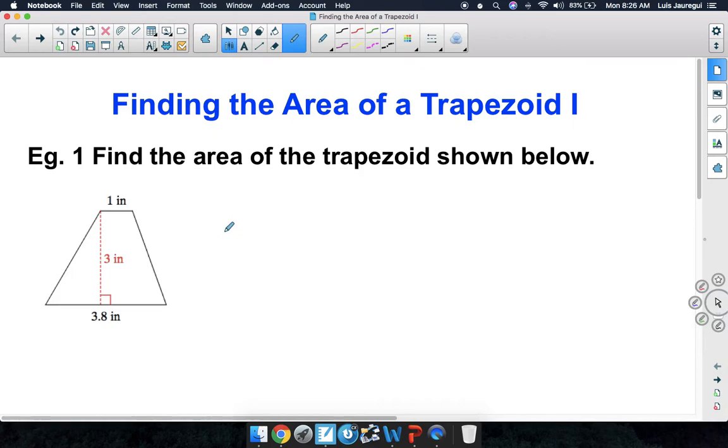Let's take a look at our example. Example 1: Find the area of the trapezoid shown below. In order for us to find the area of a trapezoid, we'll be using the formula A = 1/2 times the sum of the two bases. We'll call them big base plus little base times the height.